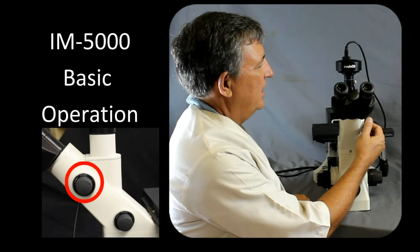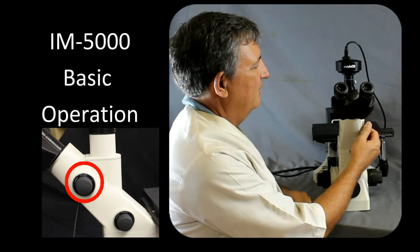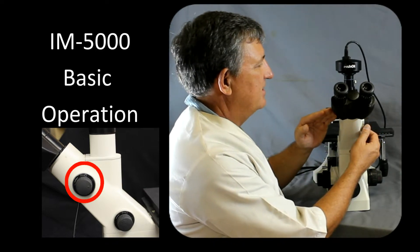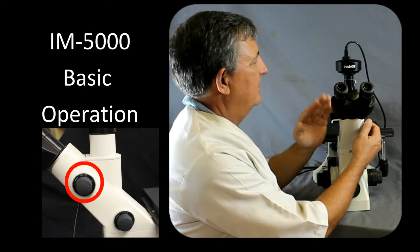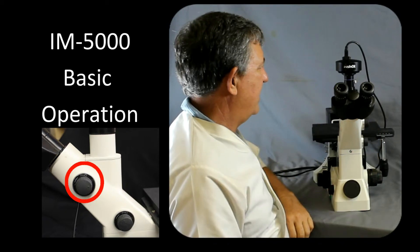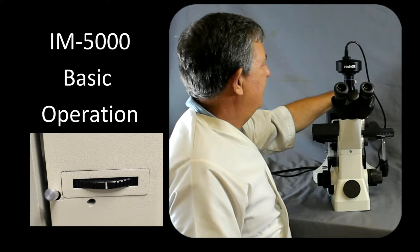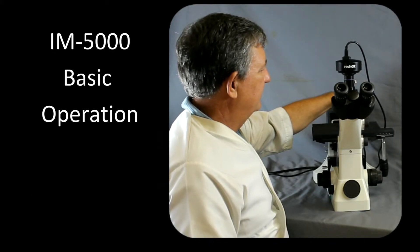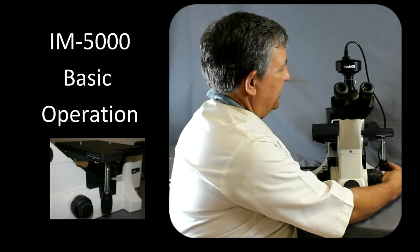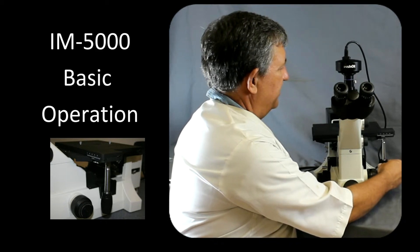This knob here will change the light path from 100% to the eyepieces to 80% to the eyepieces and 20% to the camera. There's also a number of filters that can be added on a turret in the back here. And we also have an XY control of our stage.